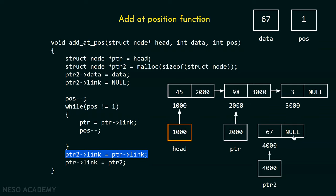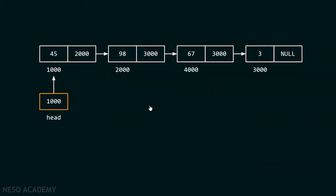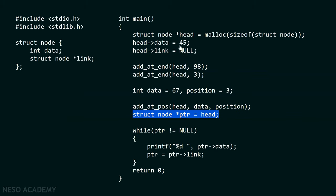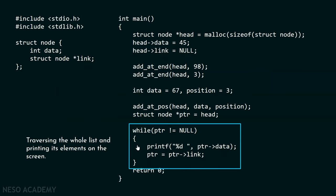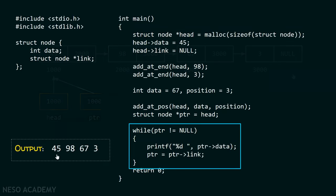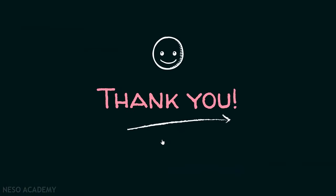After traversal, we update the link part of the new node by address 3000, then update the link part of the previous node by address 4000, inserting our new node between those two nodes. Back in the main function, we use a PTR pointer to traverse and print all elements, and the output of this program is 45, 98, 67, and 3. This program successfully adds the node at a certain position. Thank you for watching this presentation.